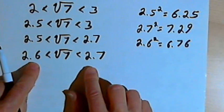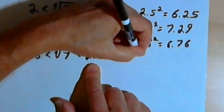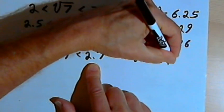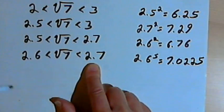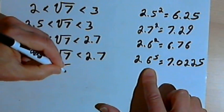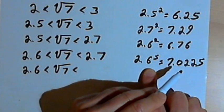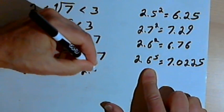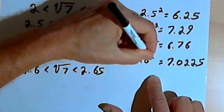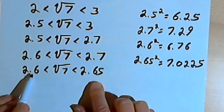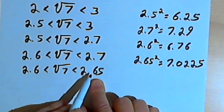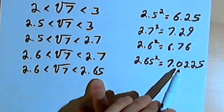If I need to go to two decimal places, I'll repeat the process and fine-tune it. I'm now looking for a number between 2.6 and 2.7, so I'll try 2.65. When I square 2.65, I get 7.0225, which is greater than 7. That means 2.6 < square root of 7 < 2.65.